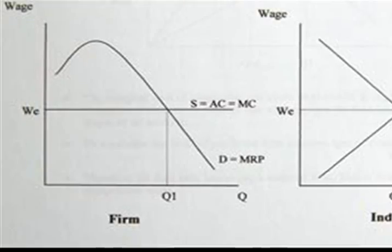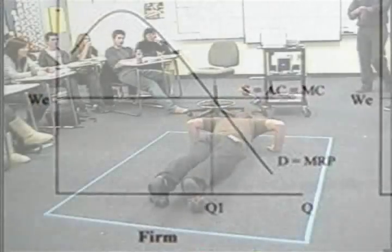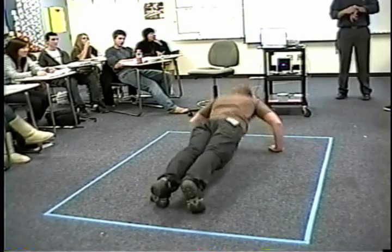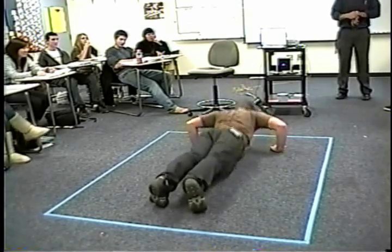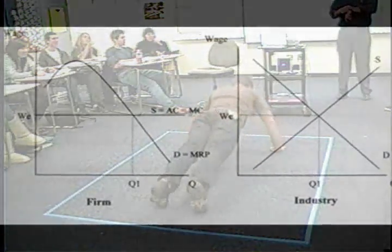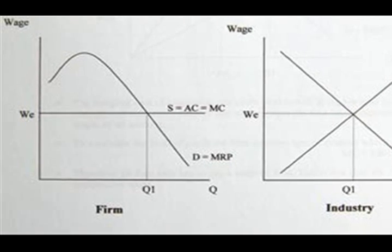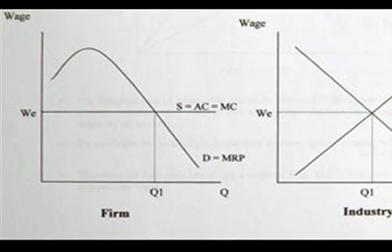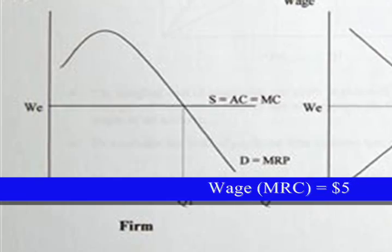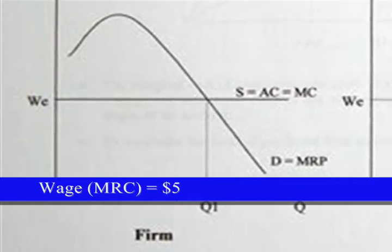I start off by telling the students that I have created a machine that converts human push-ups into electricity. Each push-up generates one dollar worth of electricity. Before I begin hiring, I establish the idea that each worker is willing to work at a wage that's set by the market. In this case, the wage is equal to the marginal resource cost of five.